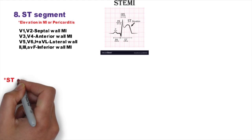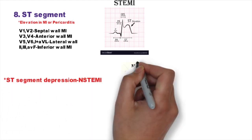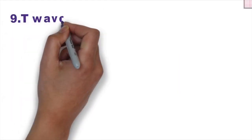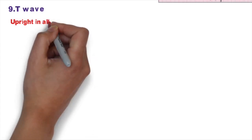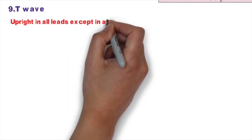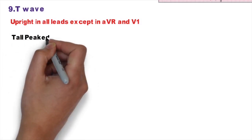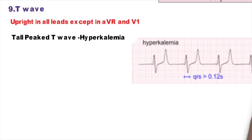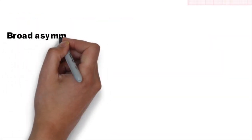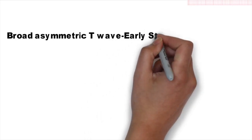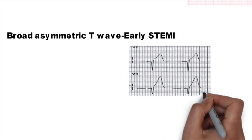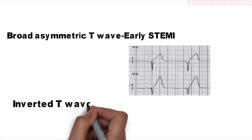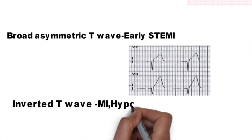ST segment depression is seen in non-ST-elevation MI (NSTEMI) and posterior MI. Regarding T waves: the T wave is normally upright in all leads but inverted in aVR and V1. Tall and peaked T waves are seen in hyperkalemia. Broad asymmetric T waves are seen in ST-elevation MI. Inverted T waves indicate MI, hypokalemia, or pericarditis.